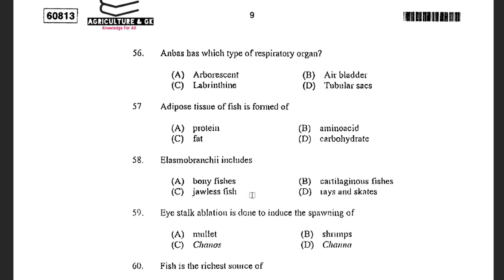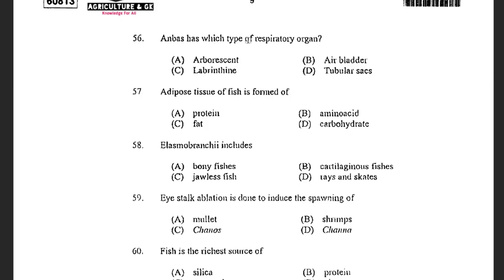Next question: Anabas has which type of respiratory organ? Options are Arborescent organ, Air Bladder, Labyrinth, and Tubular Sac. The answer is Labyrinth. The labyrinth organ is exclusively present in the Anabantoidei suborder. Labyrinth is a lung-like respiratory organ that allows the fish to breathe air from the surface water.